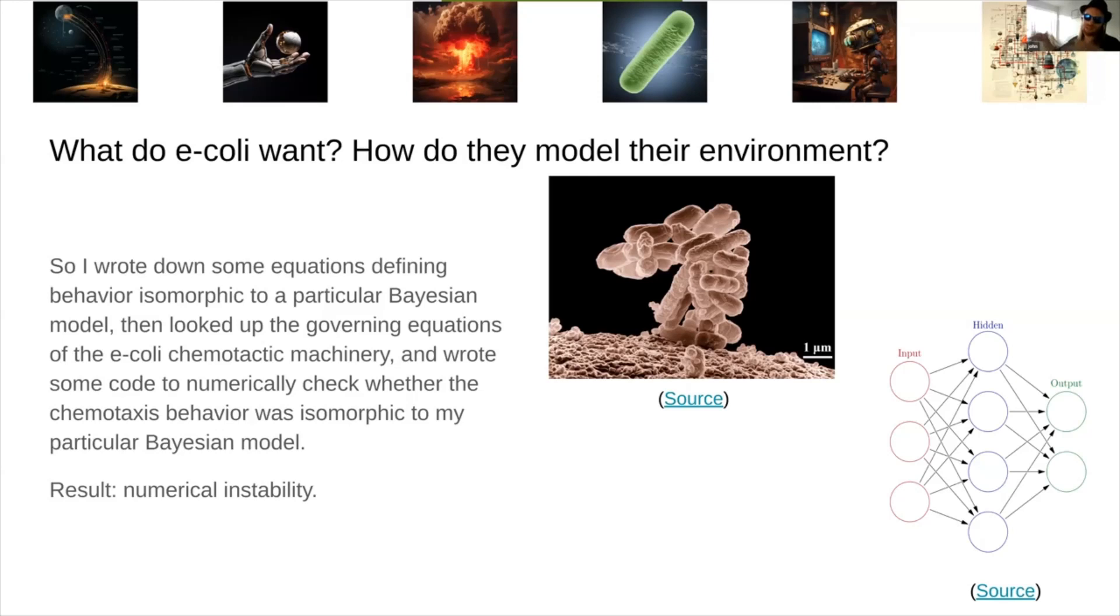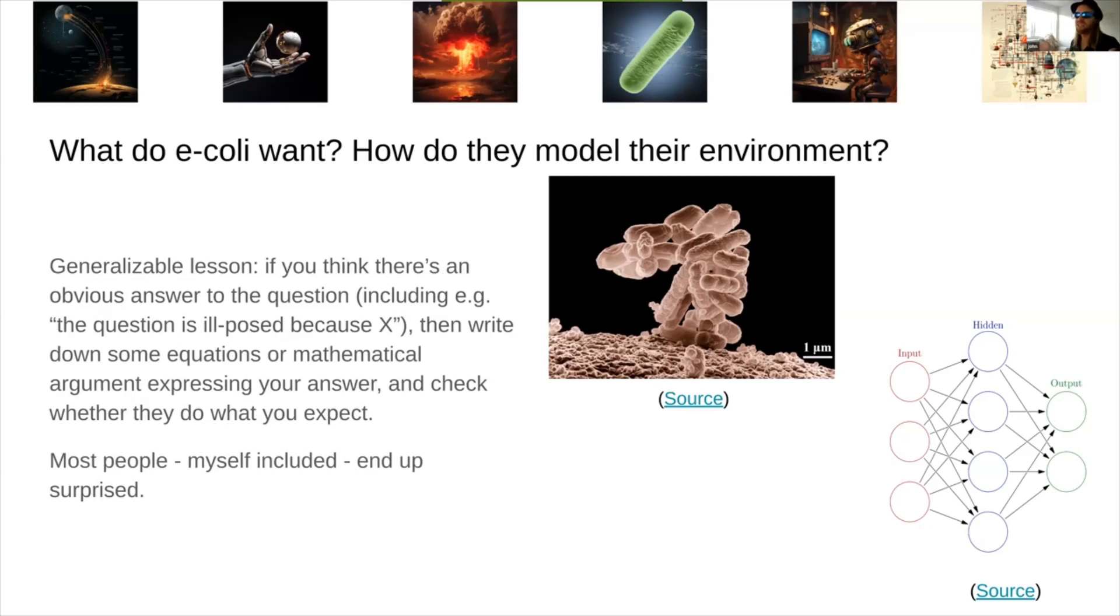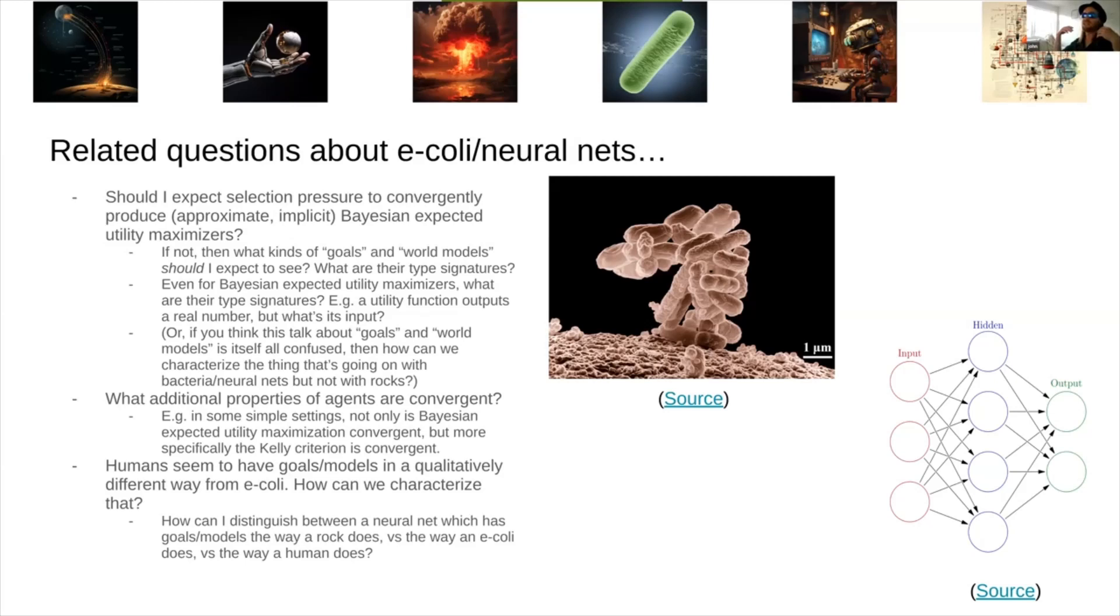This was a thing that I played around with just a little bit, did some simple, obvious stuff, wrote down some equations to find when that behavior is isomorphic to a Bayesian model, looked up governing equations of E. coli chemotaxis, wrote some code to see if it was isomorphic. And it was completely numerically unstable. This didn't work at all. Clearly, I was missing something. Point is, a lot of these questions, if you're anything like me, in the first five minutes, your knee-jerk response will be, oh, this answer is obvious. When you think that, write down the equations and try it, because I tend to be surprised.